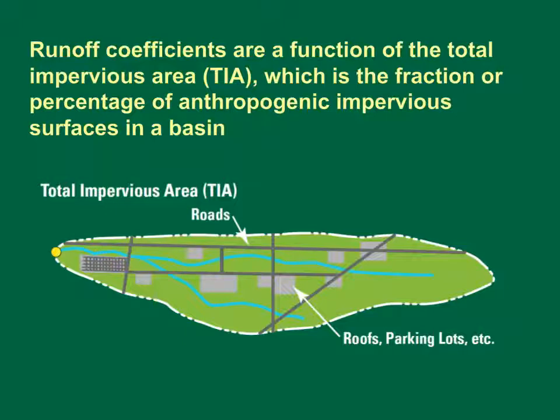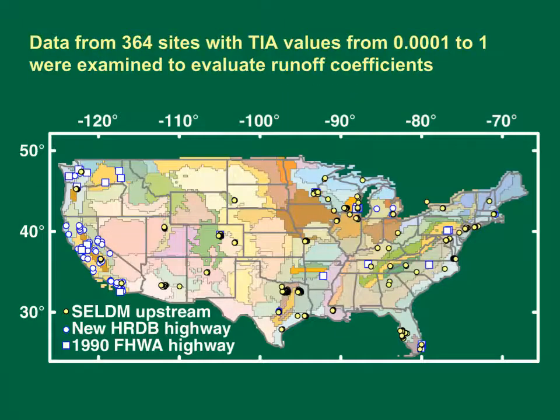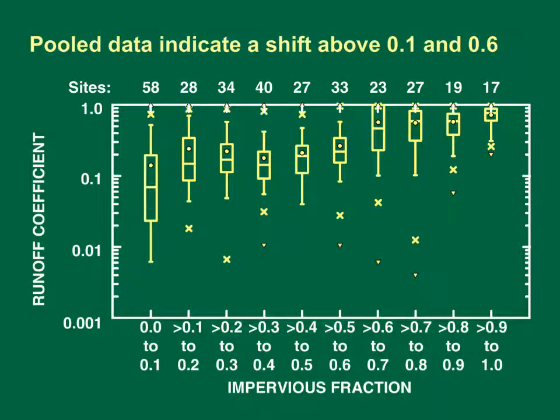This is a schematic diagram of a basin in map view showing selected components of total impervious area. The total impervious area is used to define the runoff coefficients of the highway site and the upstream basin in SELDOM. Data from 364 sites across the country with TIA values ranging from 0.0001 to 1 were examined to evaluate runoff coefficients. This graph is a box plot showing volumetric runoff coefficient fractions for 5,967 individual storm events from the 306 upstream basin sites used to develop SELDOM inputs.